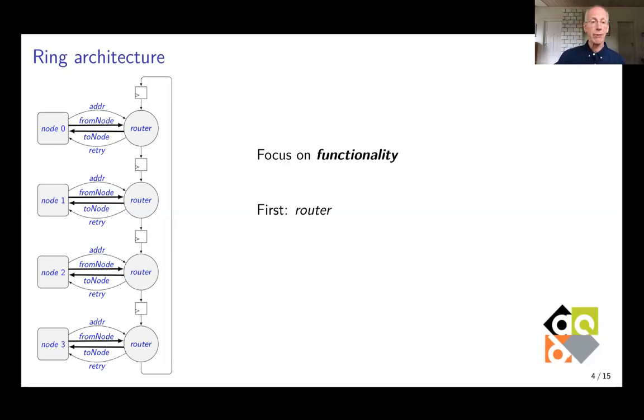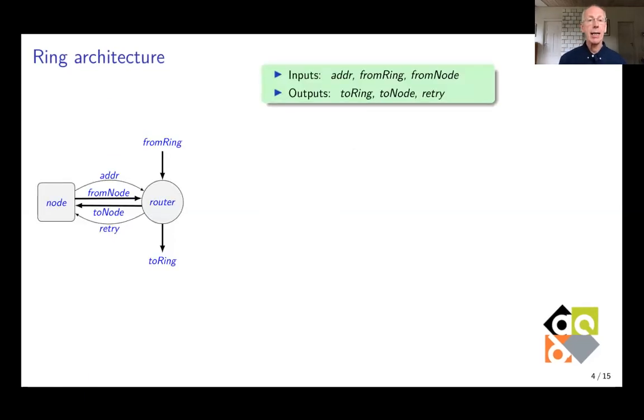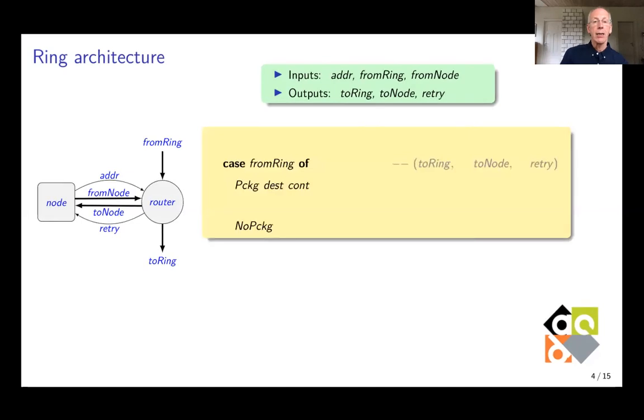So let's go to the definition of the router. It has three inputs, an address coming from the node. We assume that the address that the router has or uses is given to it by the node. There is a package coming from the node, and as outputs it will send a package to the ring or and or to the node. And it will send a boolean to the node to tell whether its package was sent or not and it has to retry.